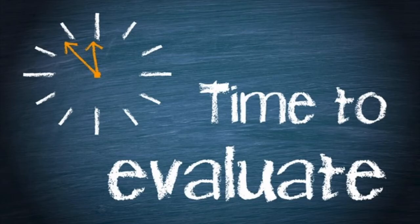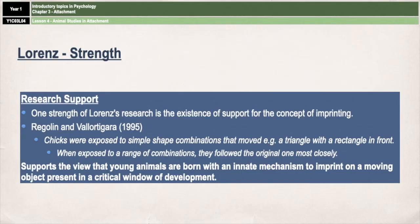So those were your two animal studies. We're now going to move on to evaluation points. First, a strength of Lorenz's research: there is research support for the existence of imprinting. Researchers in 1995 exposed chicks to simple shape combinations that moved, like a triangle with a rectangle in front. When the chicks were then exposed to a range of combinations, they followed the original one most closely. This supports the idea that young animals are born with an innate mechanism to imprint on a moving object present in the critical window of development.